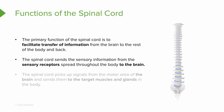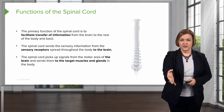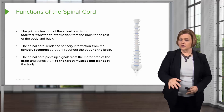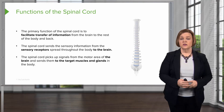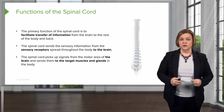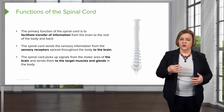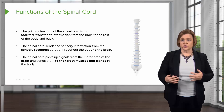The spinal cord sends sensory information from the sensory receptors spread throughout the body to the brain. It also picks up signals from the motor area of the brain and sends them to the target muscles and glands in the body. So if I just want to move my finger, I have to send a signal down to my hand to tell it to make a fist and to release. I want to pick up a leg, set down a leg — same concept. If that spinal cord gets damaged in any way, it's not going to work efficiently, and I'm going to lose control of certain parts of my body.